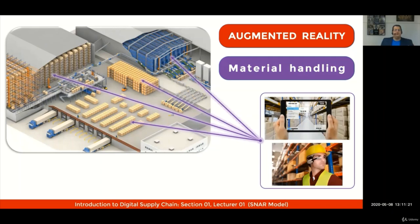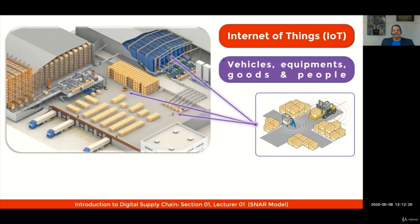You'll be able to use augmented reality solutions to improve productivity and increase safety of your material handling operations. You can use the Internet of Things — IoT — to connect vehicles, equipment, goods, and people. This will enable you to review layout, improve processes, improve productivity, and reduce accidents. There are a large number of applications, even connecting to deep learning, machine learning, and blockchain.